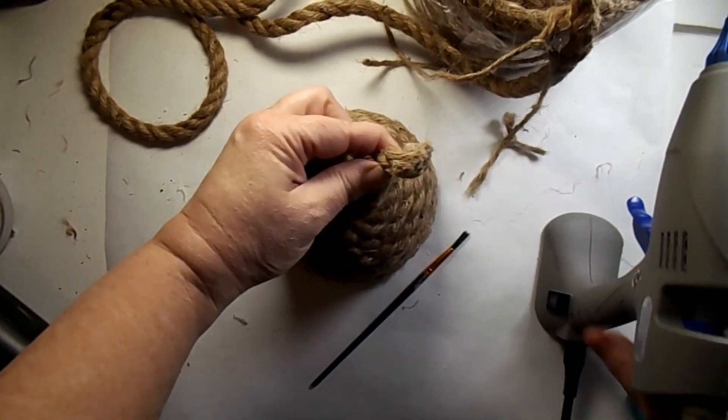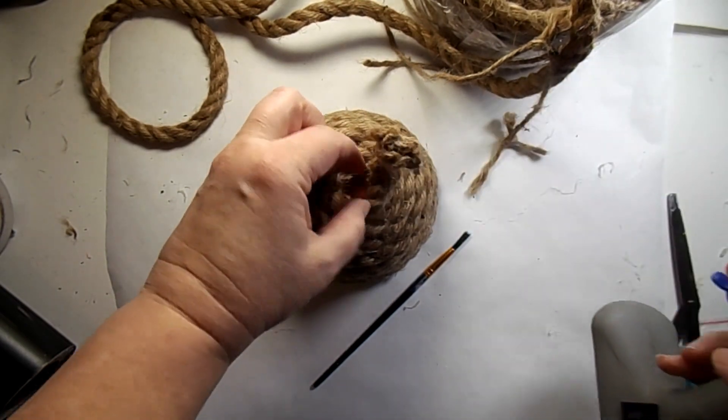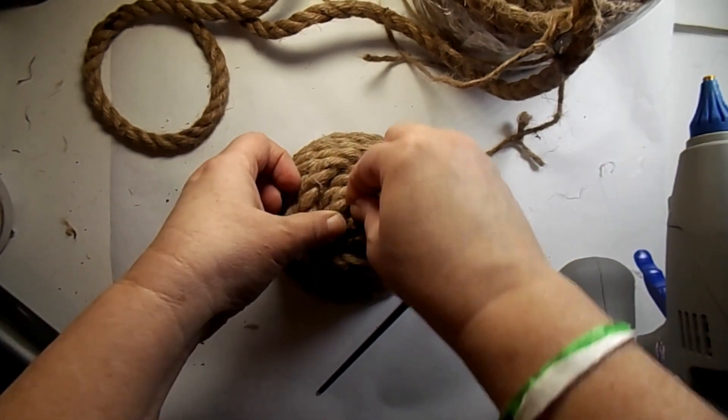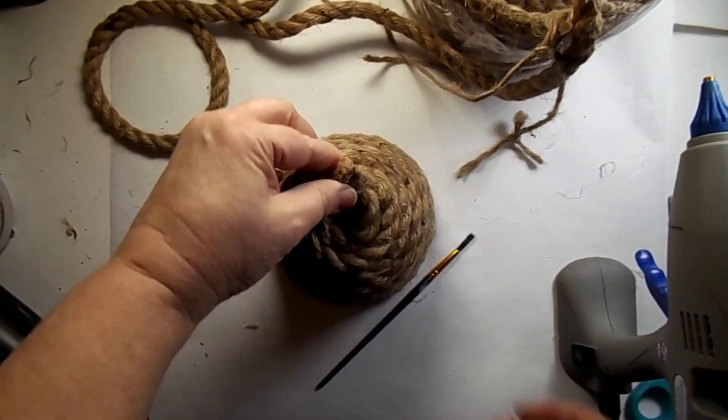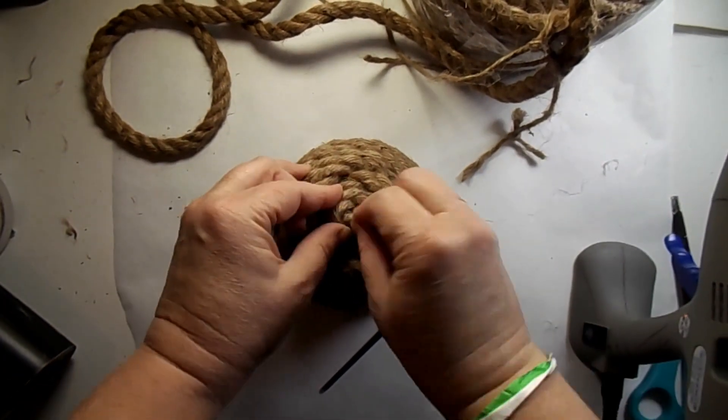I probably could have snipped a little bit more off, but I really want it to be nice and tight up top so that you don't see any of that planter. Just keep twisting that up tight. Make sure you get enough glue.